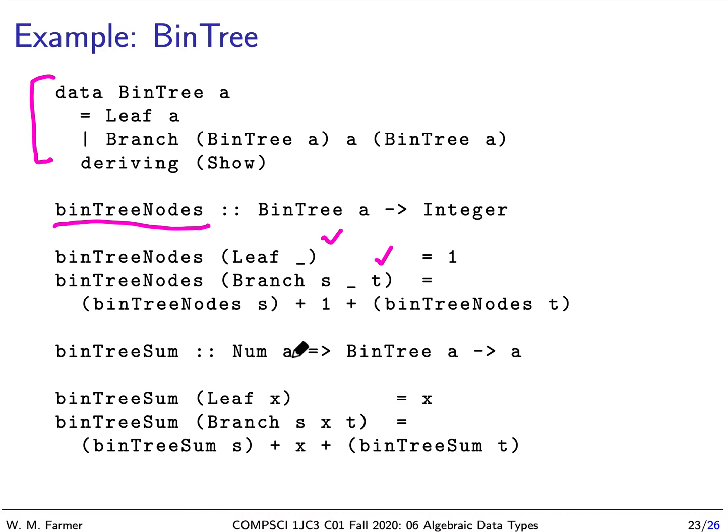So if we have one leaf node, then our tree has just one node. Now if we have a branch node, then we have the node, which is a branch node, and we also have the nodes that are in the left branch, that's this, and the nodes here in the right branch. And we add those up. So it's nodes in the left branch, plus the branch node itself, plus the nodes in the right node.